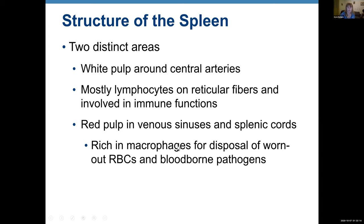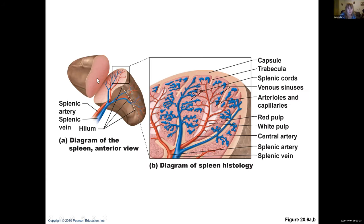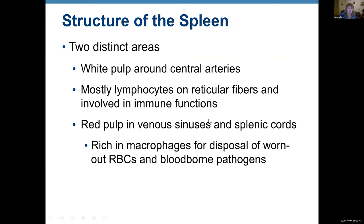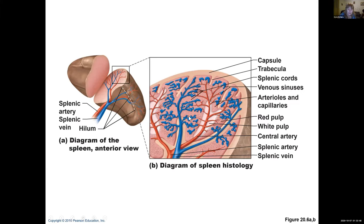White pulp surrounds the arteries and mostly has lymphocytes and reticular fibers — this part is involved in immune function. Red pulp is found in venous sinuses and splenic cords — it is rich in old, worn-out RBCs where macrophages dispose of them, and also contains blood-borne pathogens that macrophages destroy. So the spleen also fights pathogens. In the structure of the spleen you can see white pulp around the arteries — rich in lymphatic tissue — and red pulp around the sinuses and splenic cords — rich in macrophages and red blood cells.